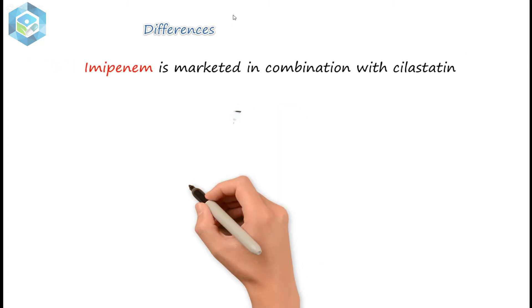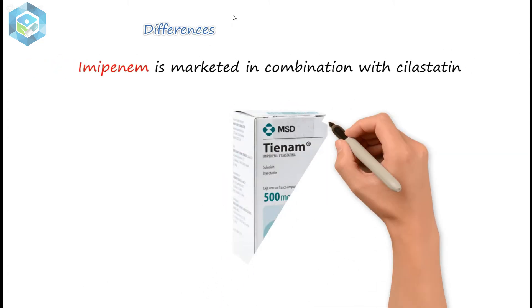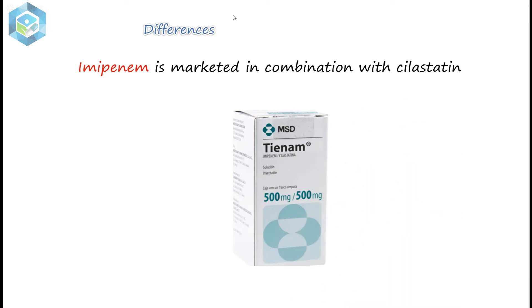Differences among these antibiotics: Imipenem is the first drug of this class. Imipenem undergoes cleavage by dehydropeptidase, found in the brush border of the proximal renal tubule. Therefore, Imipenem is marketed in combination with Cilastatin. Cilastatin is a drug that inhibits the degradation of Imipenem by renal tubular dipeptidase.